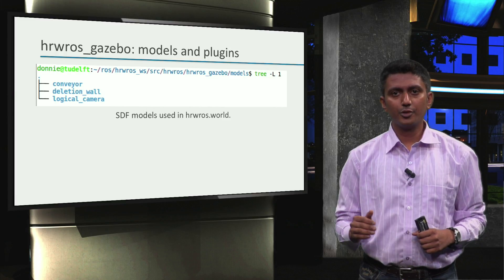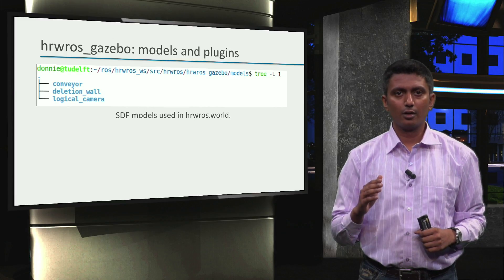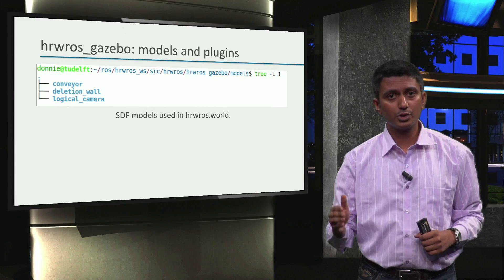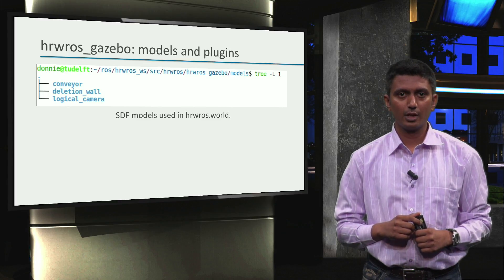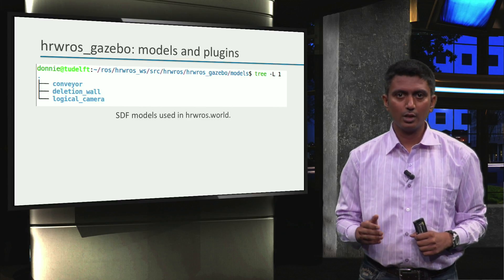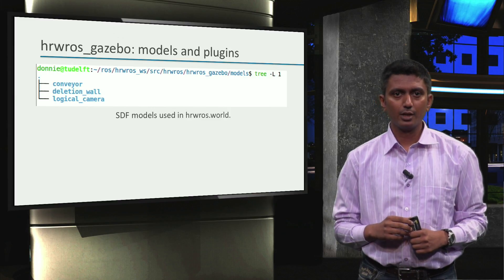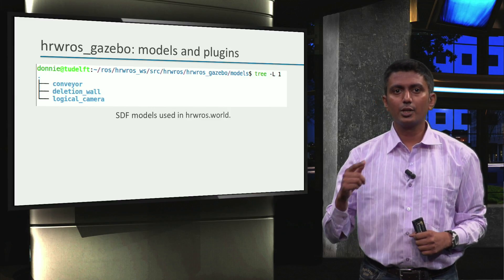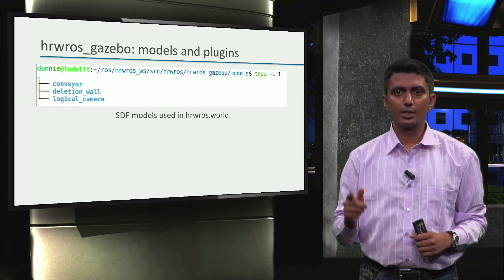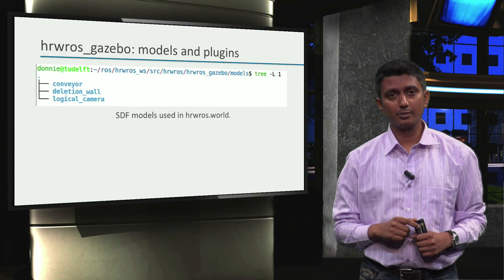So here is an overview of the different models we can or have used in the factory simulation. We have the conveyor model, the deletion wall model and the logical camera model. The first two are already used and the logical camera is what you will add in your assignments.